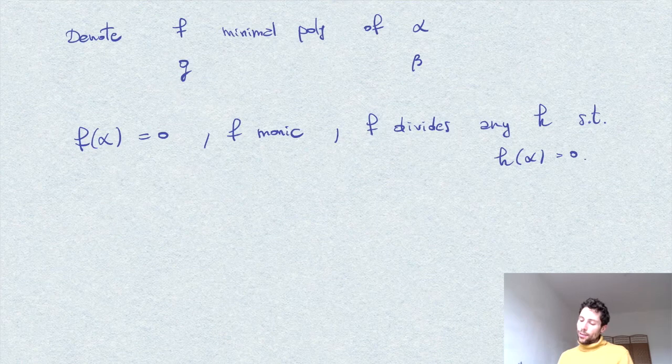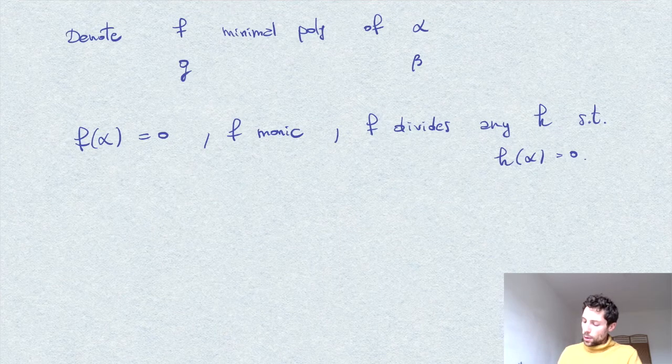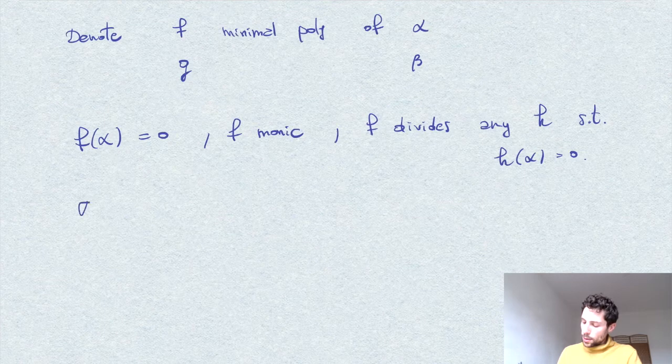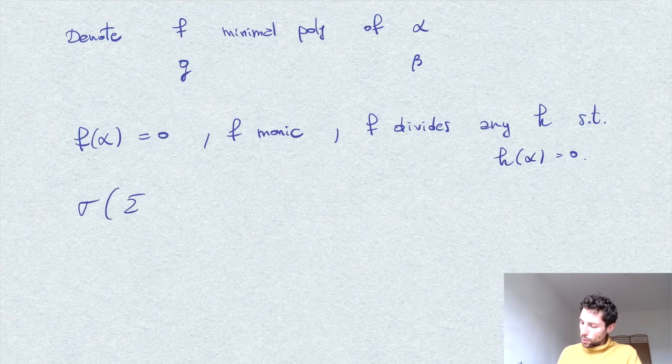We have this σ, this K-isomorphism which fixes the ground field. What does it mean for a polynomial?